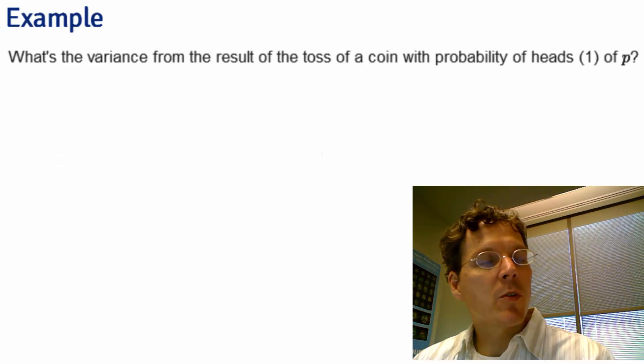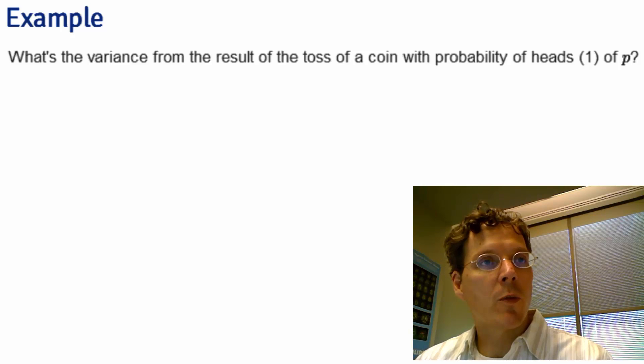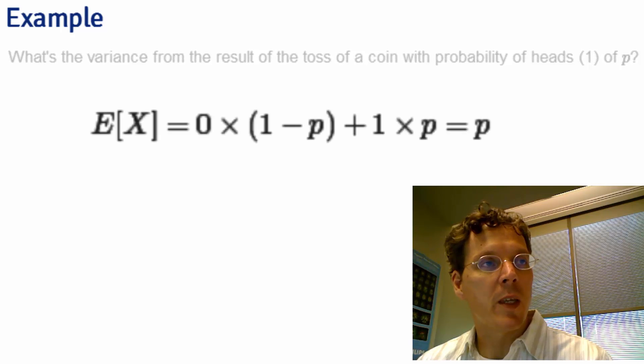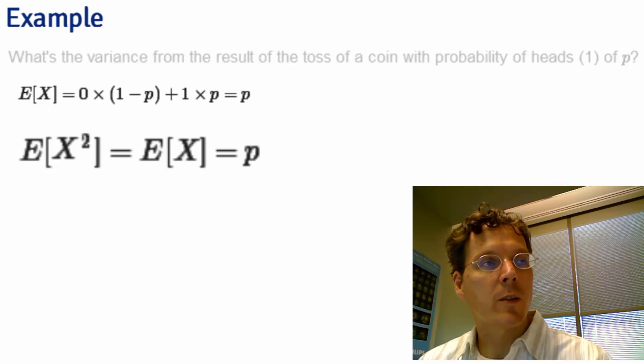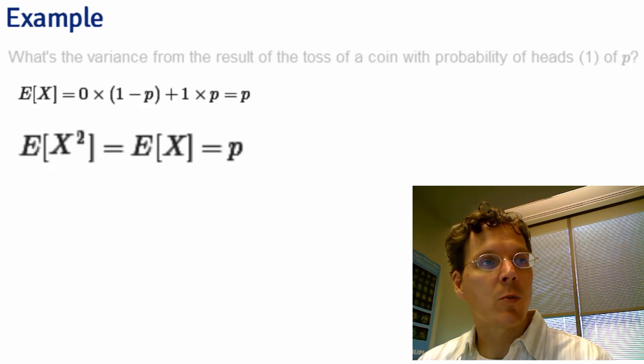Since that was so much fun, let's do another example. Imagine the toss of a coin with probability of heads of p. We already covered that the expected value of a coin toss is p from the last lecture. Let's think about the expected value of X squared. Well, in this case 0 squared is 0 and 1 squared is 1, so the expected value of X squared is exactly the expected value of X, which is p.